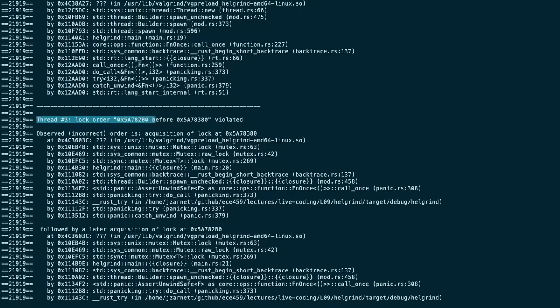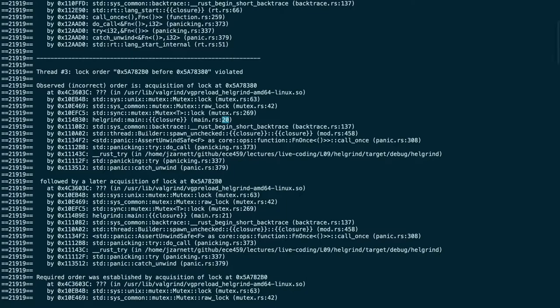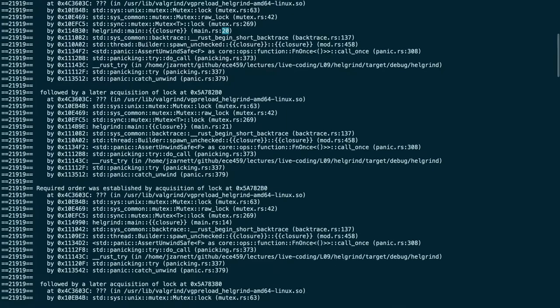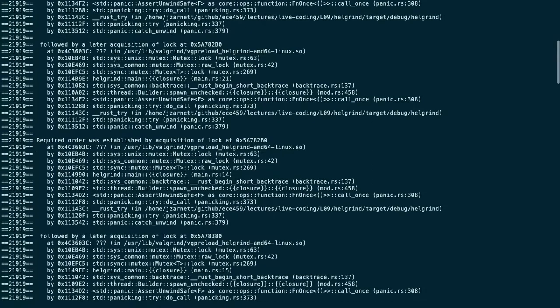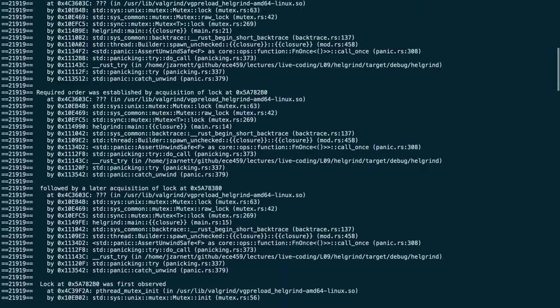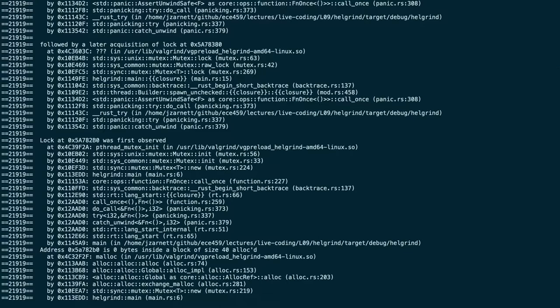We'll also see here is a lock ordering problem and lock order of and then a hex address followed by another hex address is violated. Those are the memory addresses of the locks in question and that's how we're going to keep track of which ones are which so that we don't worry about pesky things like names. And basically the observed incorrect order was a lock acquisition here on line 63, on line 20 of our actual code followed by a later acquisition on line 21. And the required order was established by a different thread that ran earlier where it acquired the lock here on line 14 followed by a later acquisition on line 15 thus successfully demonstrating the problem that we intended to demonstrate.